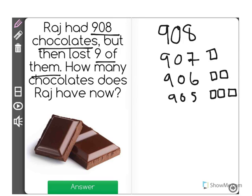That's because he lost it, so he no longer has it. So when he loses his 4th chocolate, he only has 904, and so on and so forth.